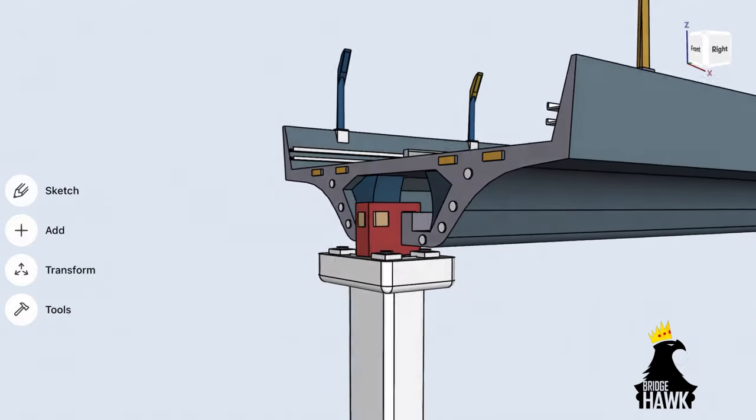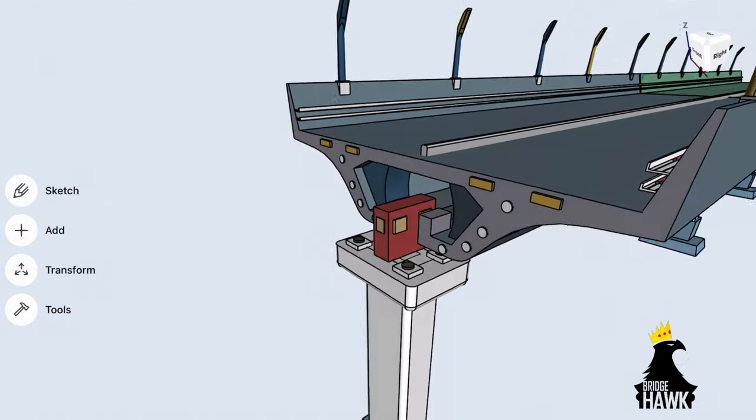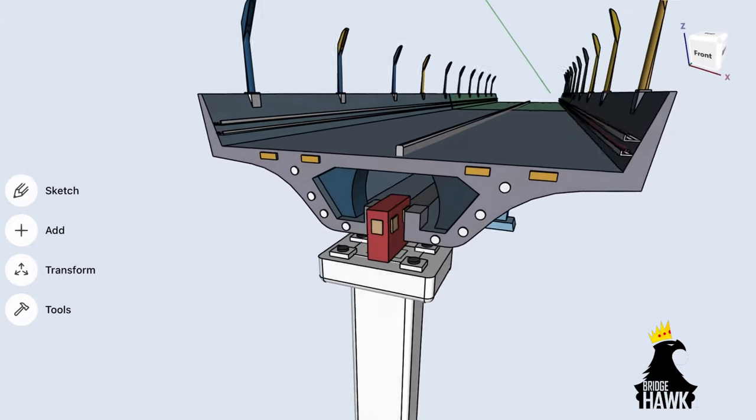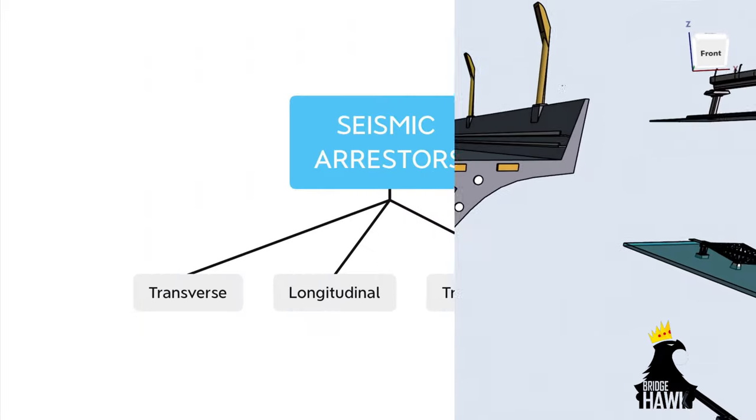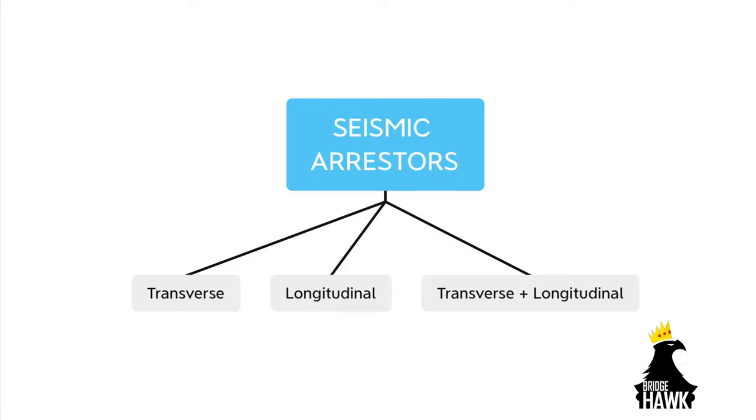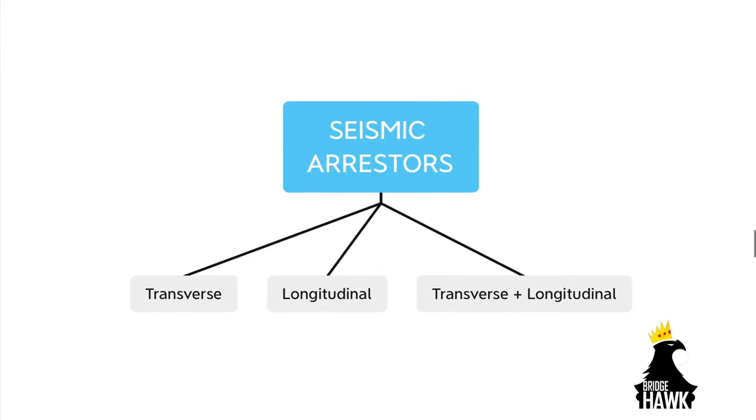A seismic arrester is characterized by its function to bear the impact of seismic forces. There may be three kinds of seismic arresters based on the direction of forces it bears. There are two directions in which they resist the seismic impact.